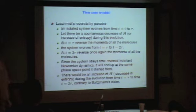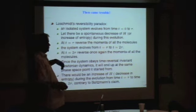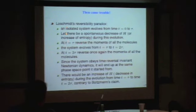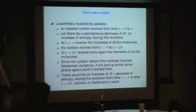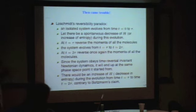After Boltzmann formulated the transport equation, there came trouble. Loschmidt's reversibility paradox states that an isolated system evolves from time t=0 to tau. Boltzmann defined an H function which is minus of entropy. Loschmidt's objection to Boltzmann's claim — that he had derived the second law from time-reversal invariant Newton's equations — was this: if there is a spontaneous increase in entropy during the evolution, then since the system obeys time-reversal invariant Newtonian dynamics, if you reverse all the momenta, the system will end up at the same phase space point it started from.